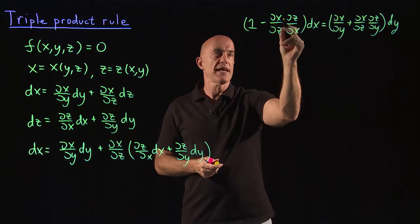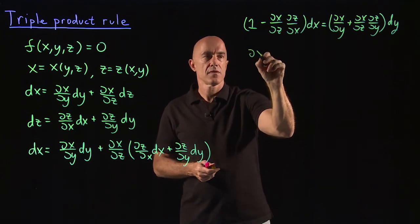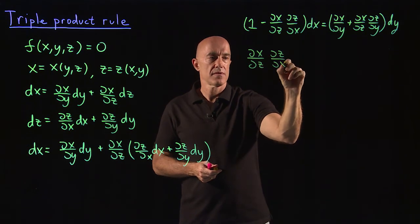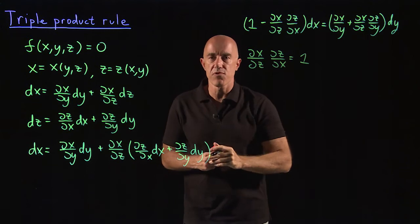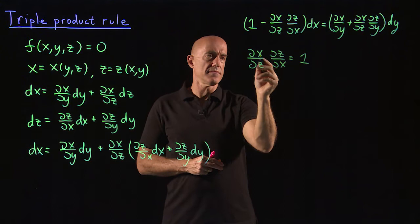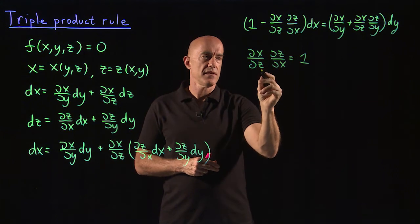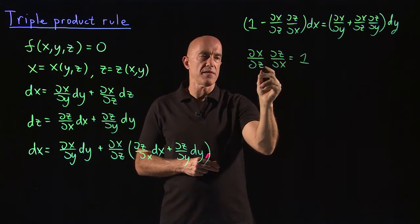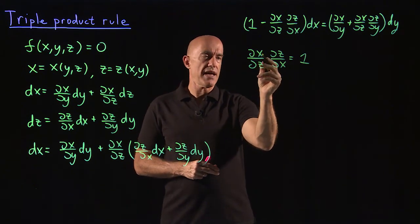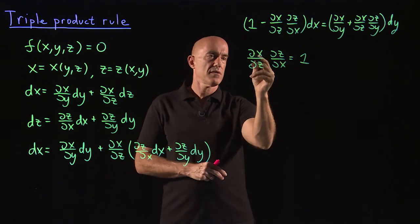So that means dx dz, dz dx is supposed to be equal to one. dx dz, dz dx equals one in order for the first parentheses to be zero. This means that dz dx is the multiplicative inverse of dx dz, right? So dz dx is one divided by dx dz. That makes a lot of sense. You change the numerator, you flip the numerator into the denominator and it's the reciprocal.